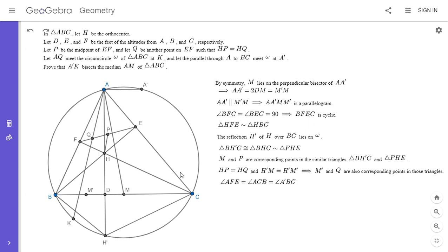And angle ACB is equal to angle A prime BC. That's true by symmetry because AA prime CB is an isosceles trapezoid.